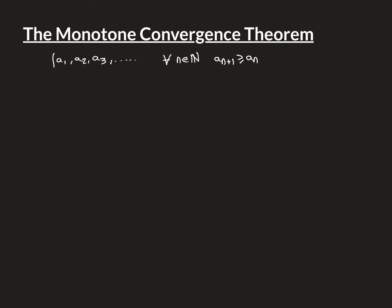What that means is that if you look at successive terms — comparing a1 to a2, a2 is the bigger of the two — every successive term is greater than or equal to the previous one. So if we put n = 1, we get a2 ≥ a1; if n = 2, we get a3 ≥ a2. Every single successive term is greater than or equal to the previous one. That is a monotonically increasing sequence.